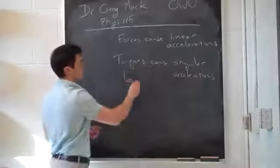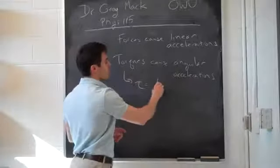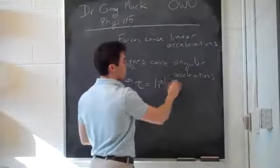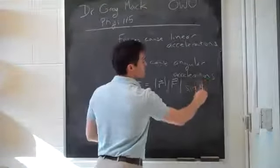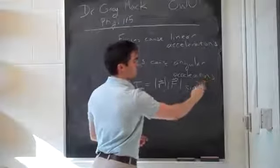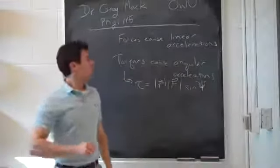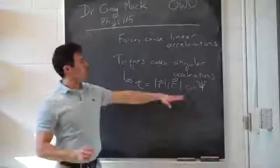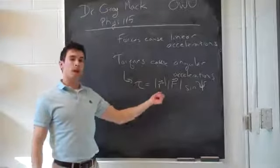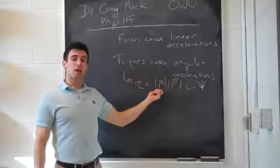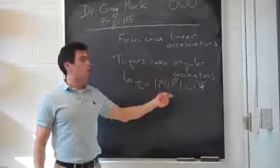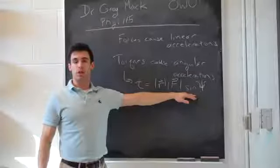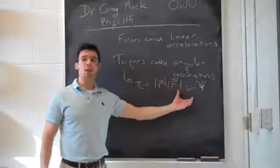The torque — lowercase tau — is equal to the distance from the axis of rotation pointing towards the force, times the force that's applied, times the sine of the angle between them, which we're calling psi. So a given torque can be increased by either increasing the force, increasing the distance from the axis of rotation, or making the angle between r and F equal to 90 degrees, which is the maximum.